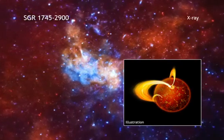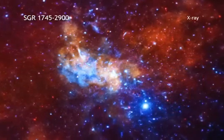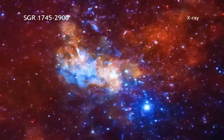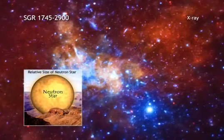This magnetar, which astronomers named SGR 1745-2900, could be as close as 2 trillion miles from the black hole at the center of the Milky Way.